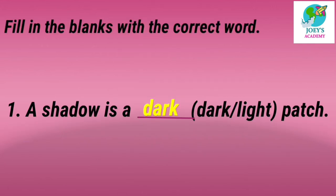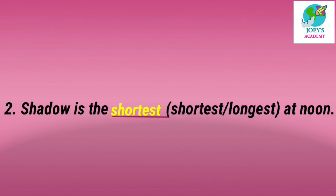Fill in the blanks with the correct word. First: a shadow is the ___. Options: dark or light patch. Answer is dark — a shadow is the dark patch. Second: shadow is the ___ at noon. Options: shortest or longest. Answer is shortest — shadow is the shortest at noon.